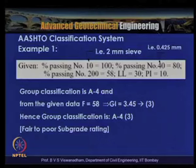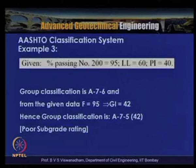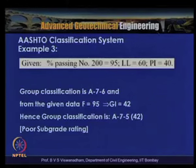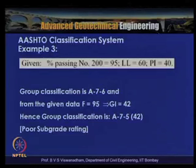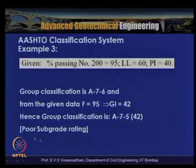The A4(3) classification indicates a fair to poor subgrade rating. In another example with percentage passing No. 200 sieve = 95%, liquid limit = 60%, and plasticity index = 40: the group classification from the chart is A7-6, and with F = 95, the computed GI = 42, giving A7-6(42), which is interpreted as a poor subgrade rating.